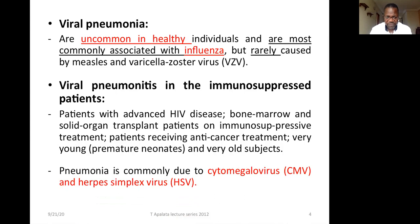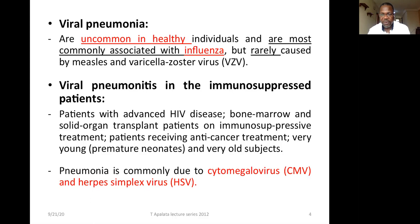Viral pneumonitis is commonly found among immunosuppressed patients, especially in South Africa where we have many HIV-infected patients. It can also be found in patients with bone marrow or solid organ transplants, patients receiving immunosuppressive treatment or anti-cancer drugs, very young premature neonates, or very old patients whose immune system is suppressed. In immunosuppressed patients, you can suspect two viruses: CMV (cytomegalovirus) and HSV (herpes simplex virus).